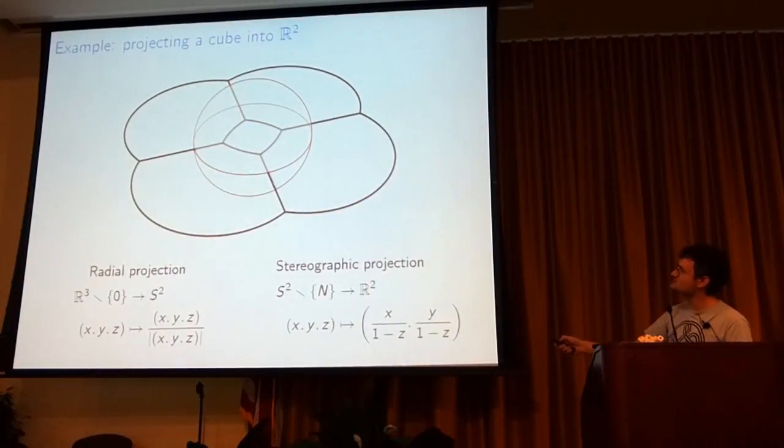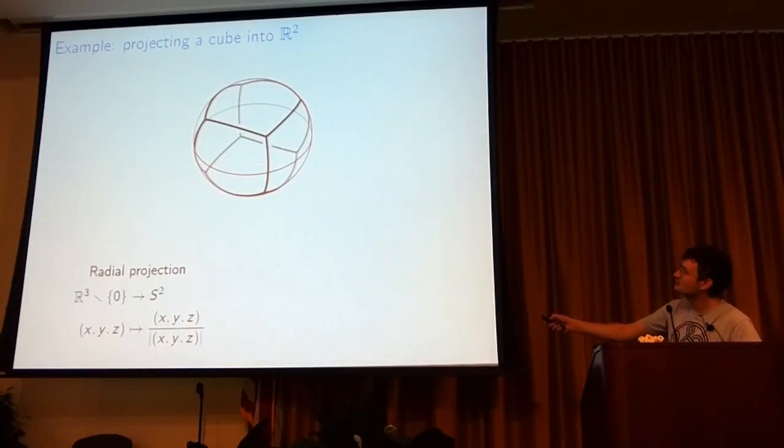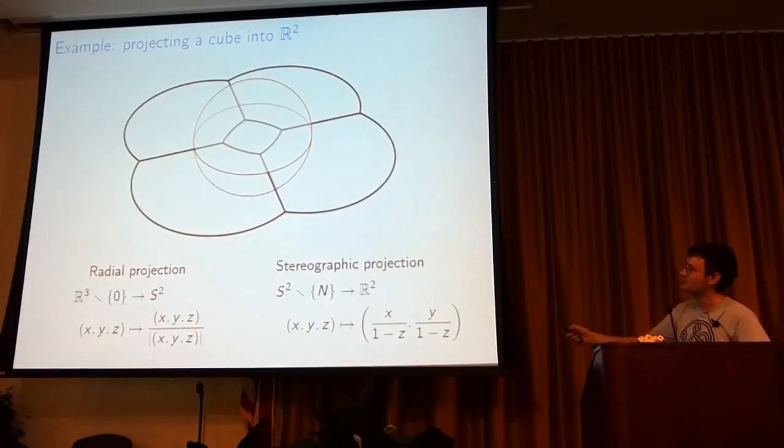One thing to notice here is suppose what's happening at points on the equator. If you're on the equator, then z is zero, so (w, x, y, z) is going to (w, x, y). So these points here are not actually living when you flip out, and these things appear as if you're going out to infinity.